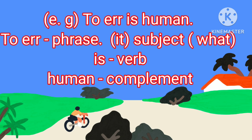Let's take the example: 'To err is human.' Here, 'to err' is a noun phrase. It is the subject of the sentence. The whole phrase 'to err' stands for the pronoun 'it.' So, 'to err' acts as a noun phrase.